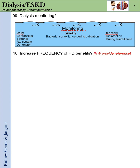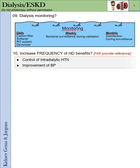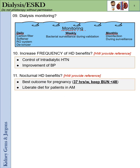What are the benefits of increasing the frequency of HD? You control intradialytic hypertension and improve blood pressure. Benefits of nocturnal HD, especially in pregnancy: this provides the best outcome, about 37 hours per week while keeping the BUN less than 48. You must liberalize the diet for patients in the morning to avoid malnutrition.